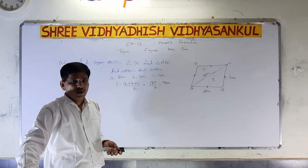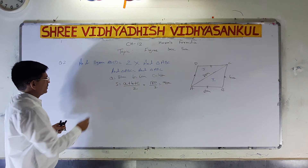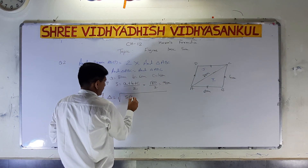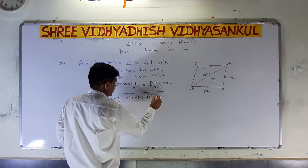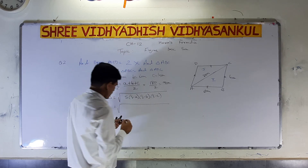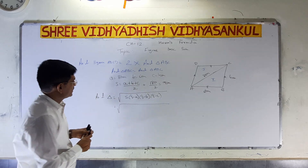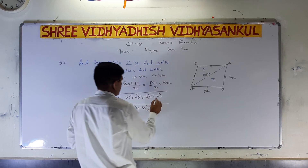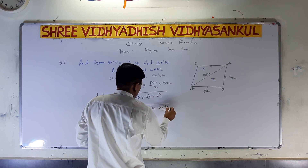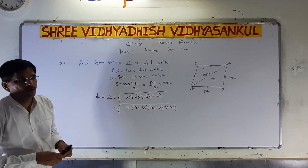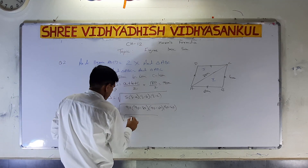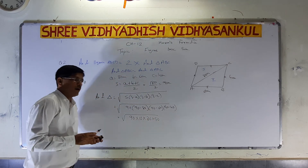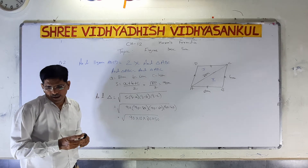Now, which formula do we apply? Area of triangle is equal to under root of S into (S minus A) into (S minus B) into (S minus C). S is 90. So we have under root of 90 into (90 minus 80) into (90 minus 60) into (90 minus 40), which is under root of 90 into 10 into 30 into 50.